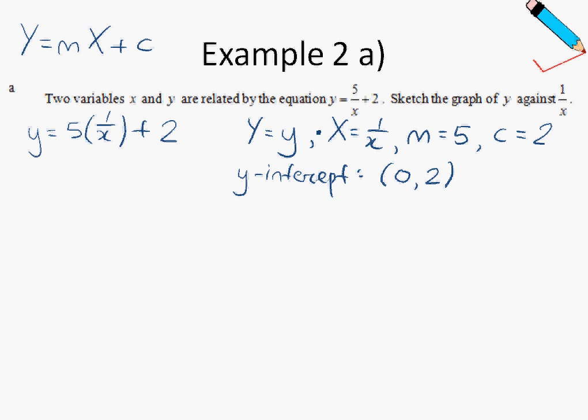Now the gradient is 5, right? So using the gradient, perhaps we can find another point on the line. So when x is equals to 1, the other point I'm trying to find is when x is equals to 1, let my y be equals to y2,